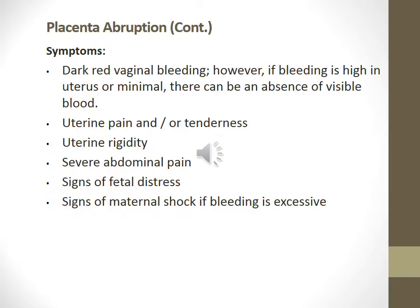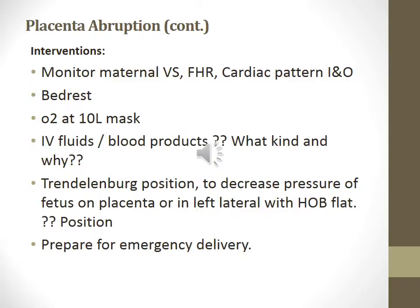Signs and symptoms of placenta abruption: dark red vaginal bleeding; however, if bleeding is high in the uterus or minimal, there can be an absence of visible blood. Uterine pain or tenderness, uterine rigidity, severe abdominal pain, signs of fetal distress, and signs of maternal shock if bleeding is excessive. Interventions: monitor the mother's vital signs, fetal heart rate, cardiac pattern, I&O. Bed rest, O2 at 10 liters by mask, IV fluids, blood products if ordered, Trendelenburg position. Decrease the pressure of the fetus on the placenta by placing her in the left lateral lying position with head of bed flat. Prepare for emergency delivery.